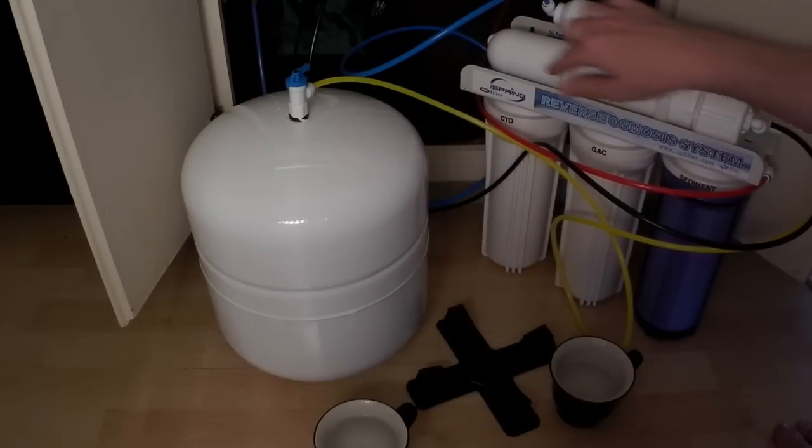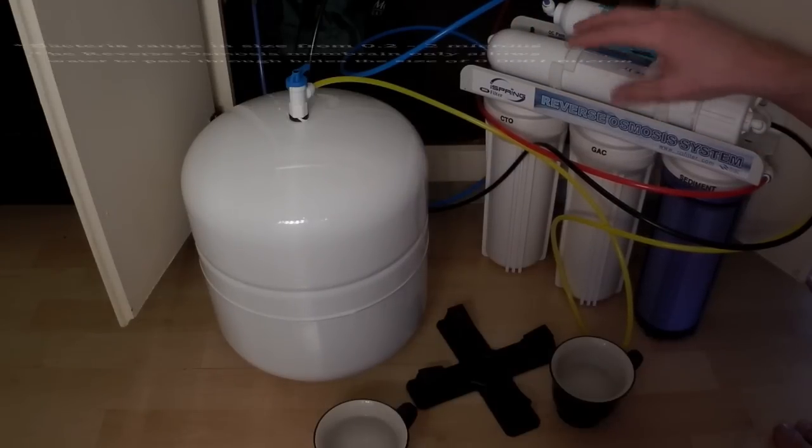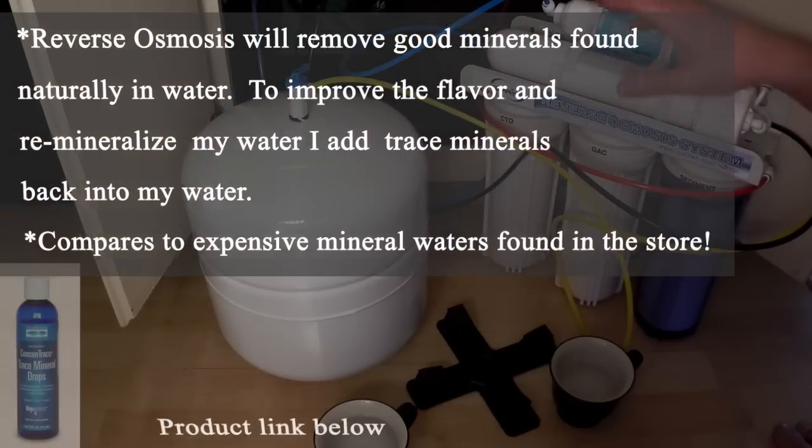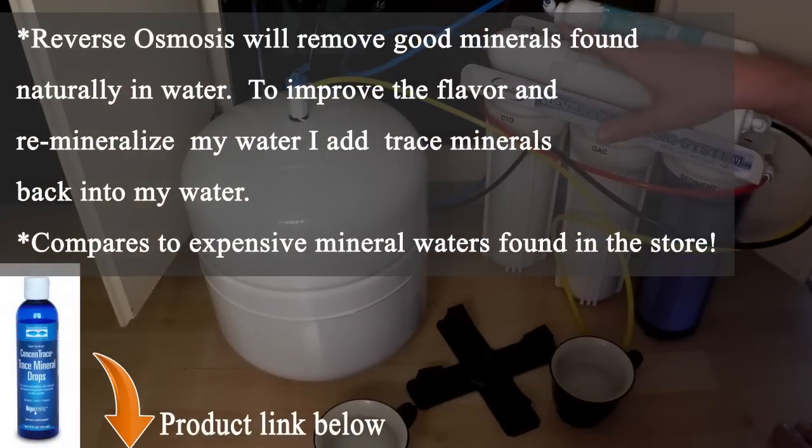And in the fourth stage of your system, which is this block up here, is the reverse osmosis membrane. It only lets water through at 0.0001 microns. This is really the heart of the RO system, and it produces drinking water at about 75 gallons per day.